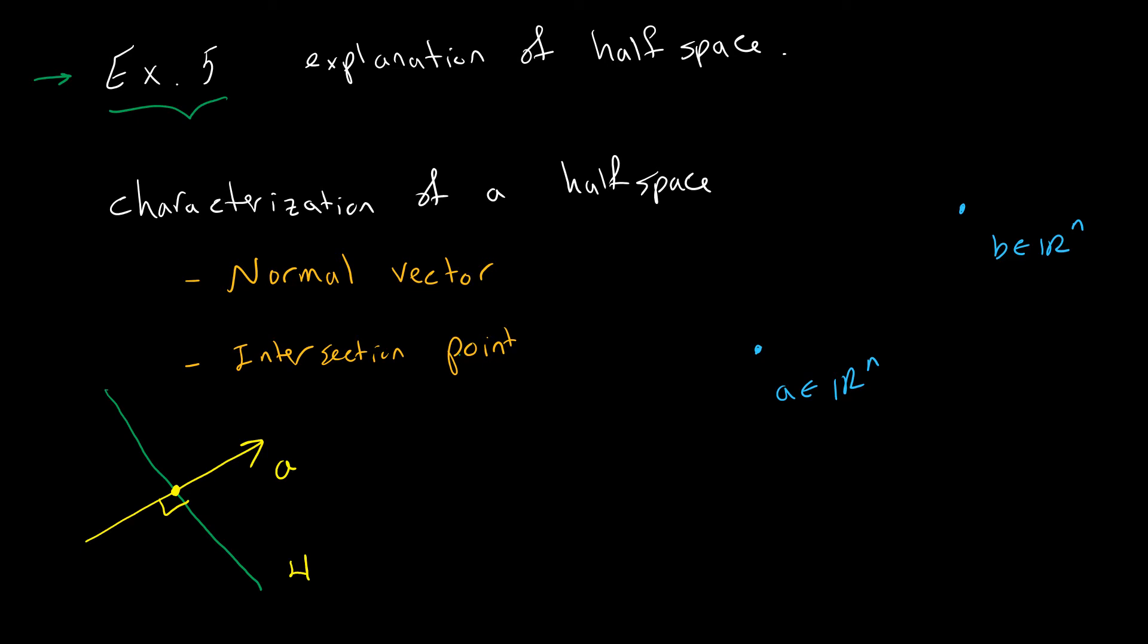By having this vector a and that intersection point, we can characterize our halfspace. Now we have two different points, so how can we characterize points that are closer to a than b? Let me just connect these two points, a which is a point in R^n and b which is a point in R^n as well.